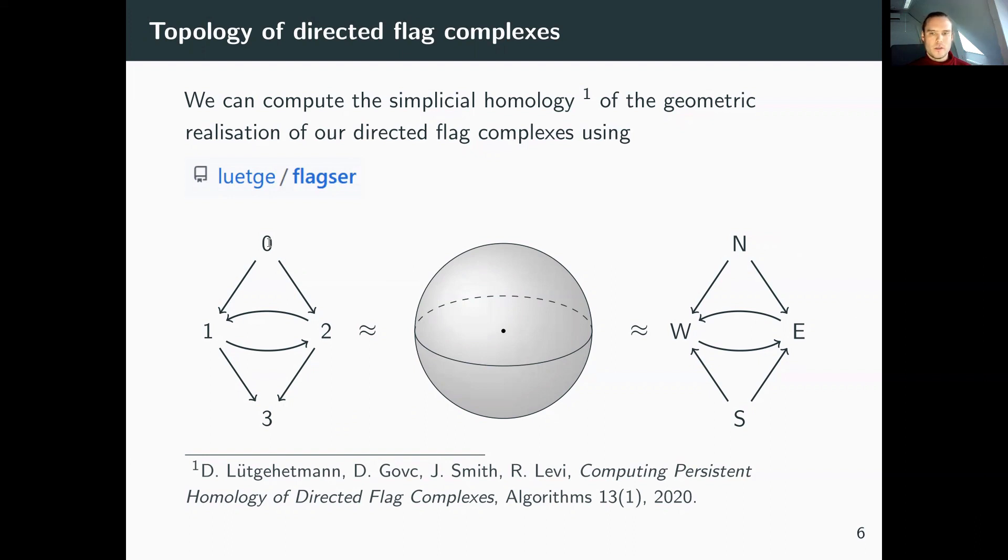As an example, we have these two different directed graphs. On the left and on the right, we've just reversed the orientation of the arrows. If we build the directed flag complexes and compute the homology, we see these two directed flag complexes are essentially homeomorphic to two-spheres. This raises the question that the directed flag complex and its topology is insensitive to the directionality of the graph, because it cannot recognize these two directed graphs as different. Topologically, they are both the two-sphere.